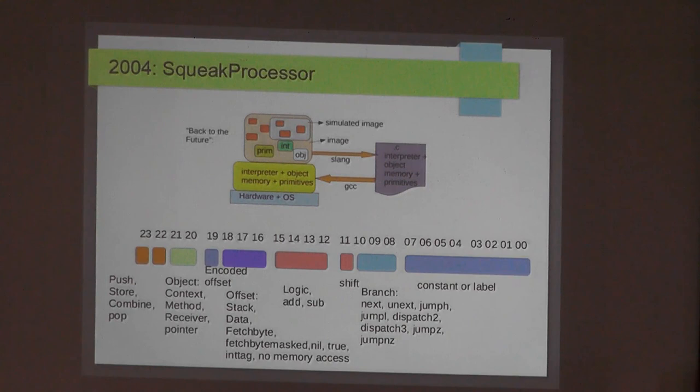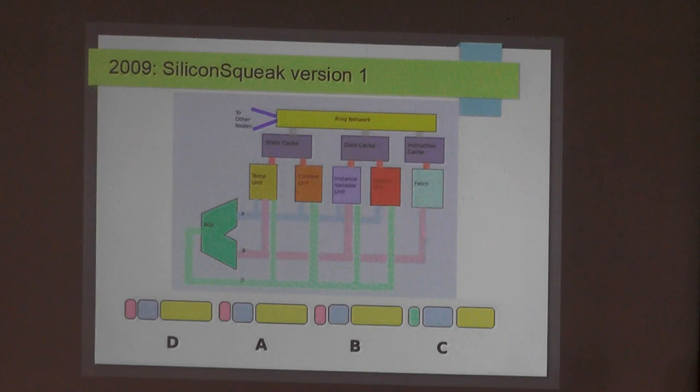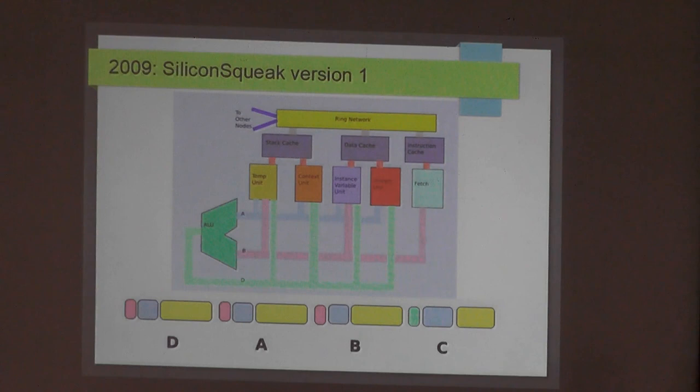In 2008, a group from the Netherlands, the United States, and elsewhere asked if I could do a processor to run Squeak. I said yes, I have this 2004 design — I could update and improve it. This became version 1 of Silicon Squeak. It had a 32-bit instruction where typical Squeak bytecodes translate into a single 32-bit instruction, making it really fast, but calls and sends are slower.